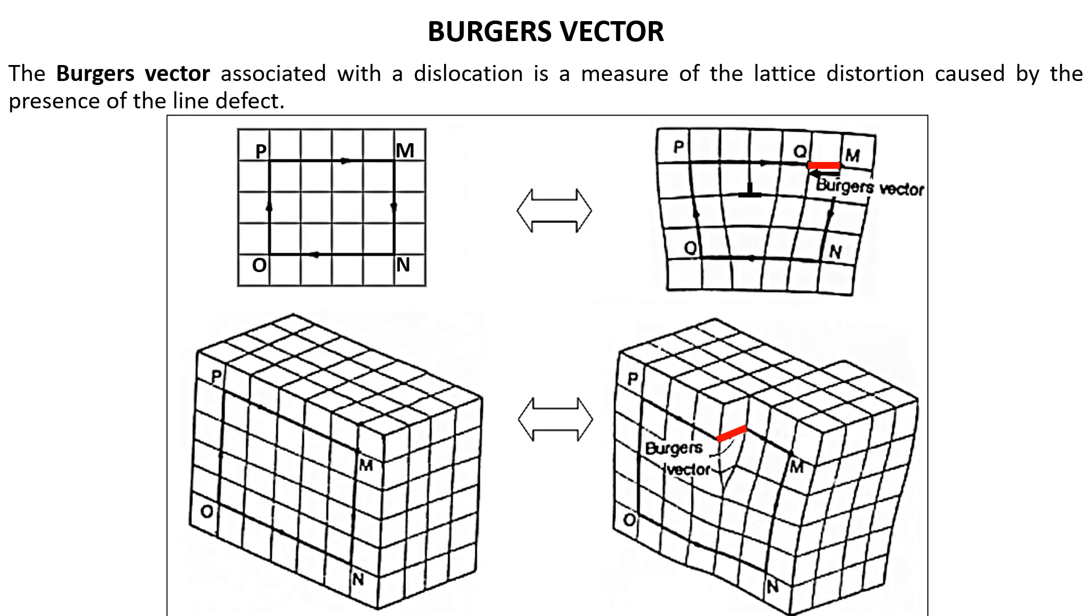Let's try to understand the Burgers vector with the help of these images and diagrams. In this image here we have 2D perfect lattice on the top left and 3D perfect lattice on the bottom.